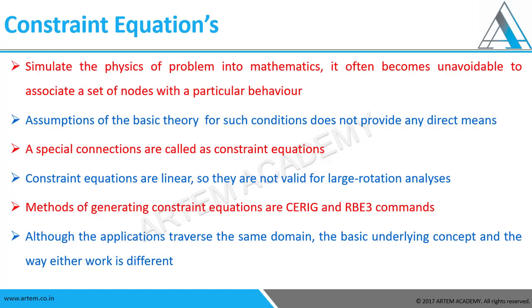The assumptions of basic theory for such conditions do not provide any direct means - this is where special connections called CEs are applied. As discussed in the previous video, CEs are linear connections that completely depend on two things: degrees of freedom and coefficients. They are not valid for large rotation analysis since we are undertaking linear combinations. In this video, we are going to discuss CE-rigid and RBE3 in detail - how they act and their applications.